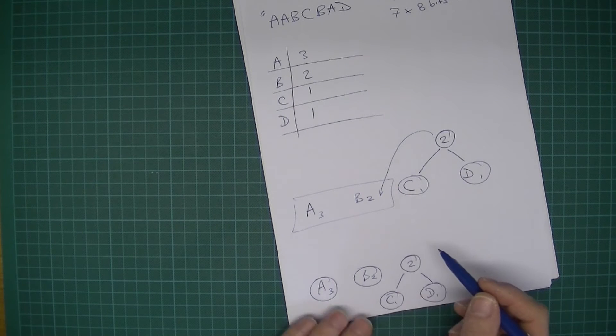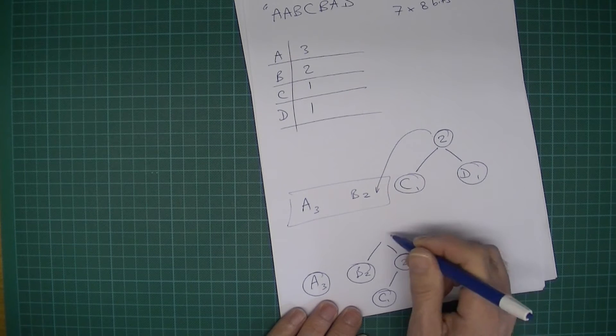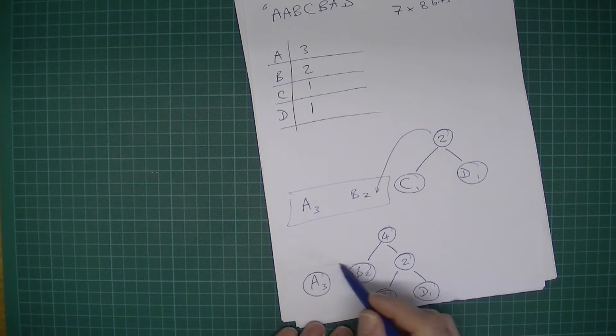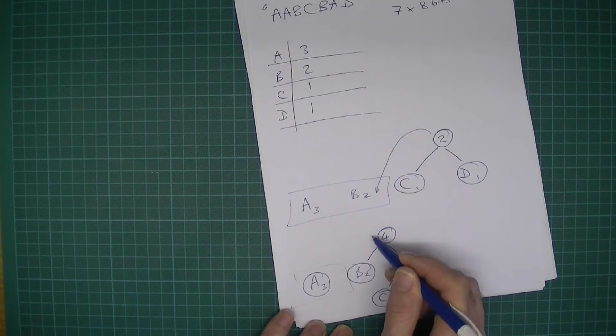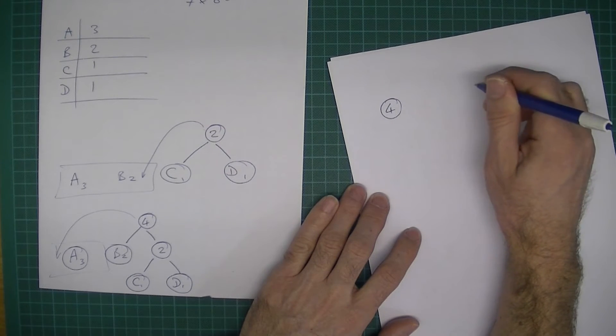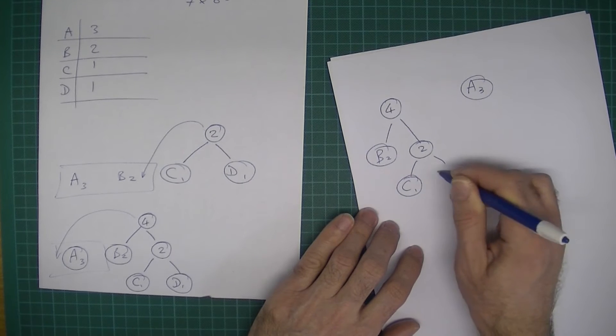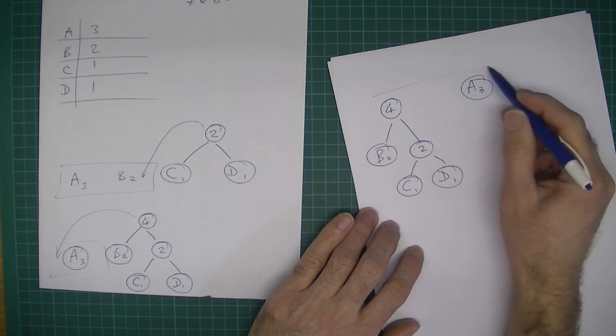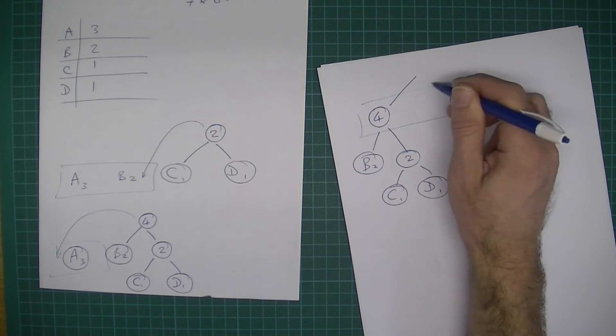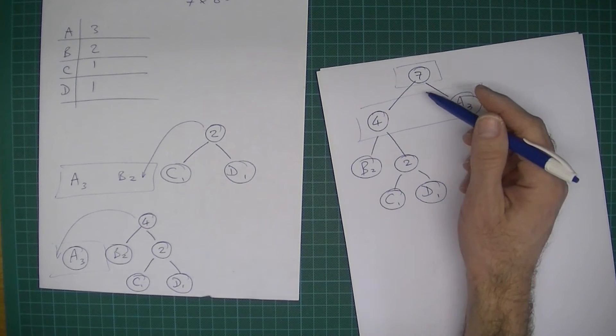Then we take the two with the lowest frequency, which is this B which there's two of, and then there's two. Add them together: two plus two is four. Remember this is a priority queue. This four is greater than three, so when we rewrite it we're going to put it there. This time we've got four here, we've got A with a frequency of three, and the frequency of one. That's now our new priority queue and we need to join these two, so four plus three is seven.